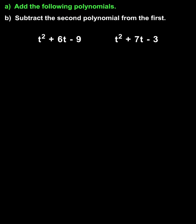In part A, to add the given polynomials, we simply add parentheses t squared plus 6t minus 9 plus parentheses t squared plus 7t minus 3. Notice that I used parentheses around the polynomials. This is a good habit to get into, even though the parentheses will not affect the addition.